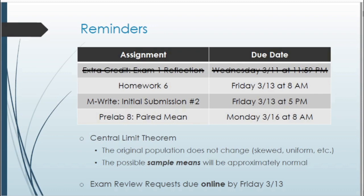A couple other reminders before we get started about the central limit theorem that we talked about last week. Whenever we're working with the central limit theorem, our original population does not change whatsoever. It might be skewed or uniform. What instead we're doing is creating a new distribution of sample means pulled from the original population, and that new distribution of sample means is what is approximately normal.